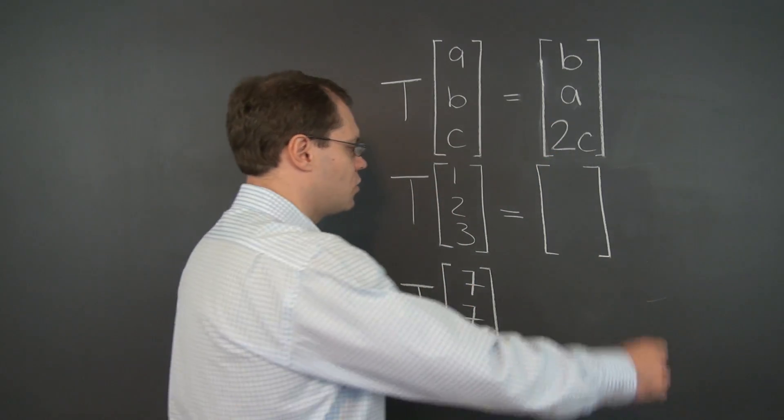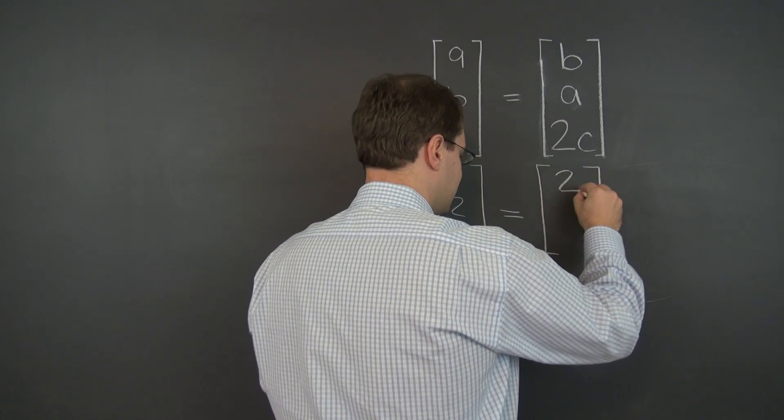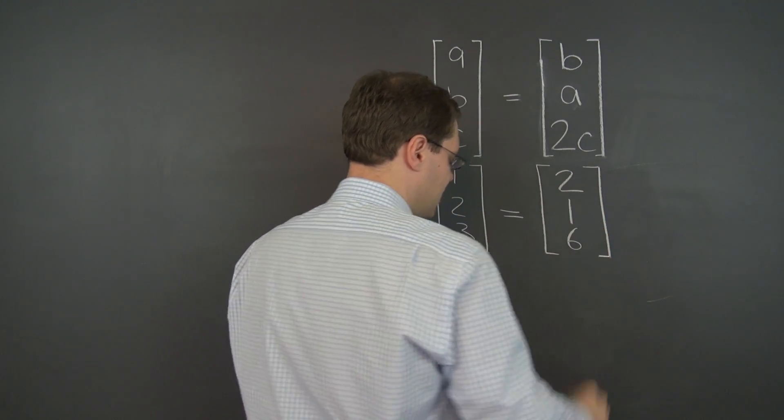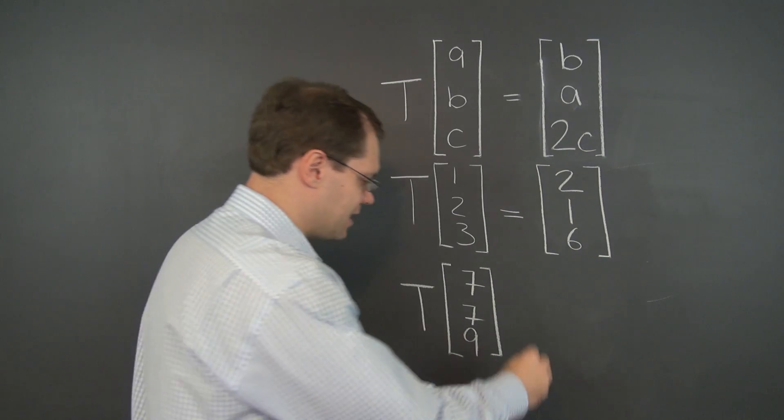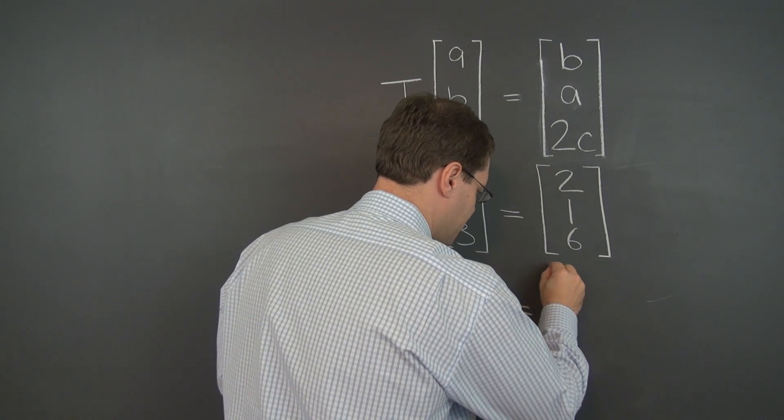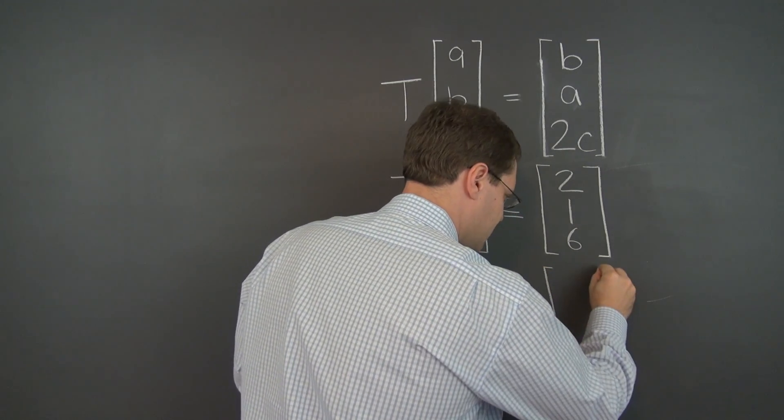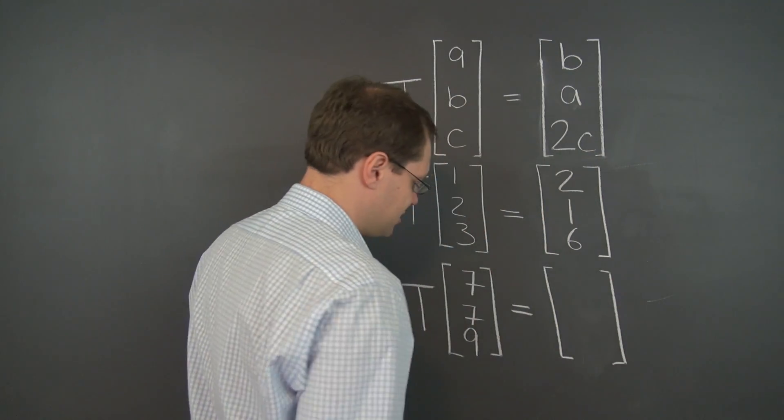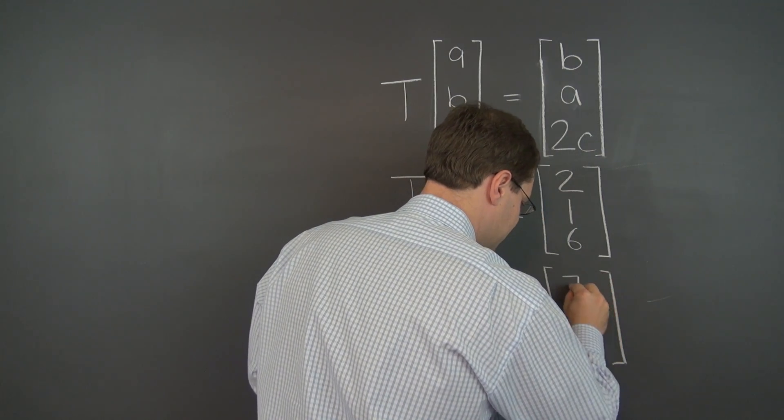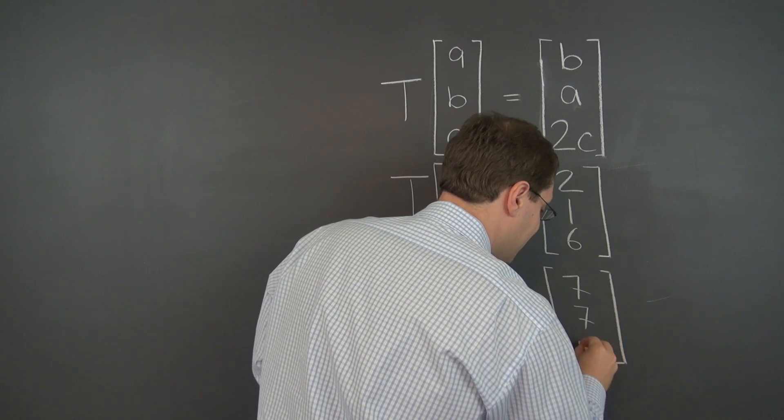What this transformation does is switch the first two entries and multiply the last entry by 2. So 1, 2, 3 will go into 2, 1, 6. And similarly, 7, 7, 9, that's an interesting one. It has the switching, switching the first two entries does nothing. So we end up with 7, 7, 18.